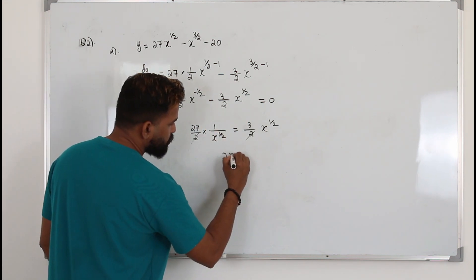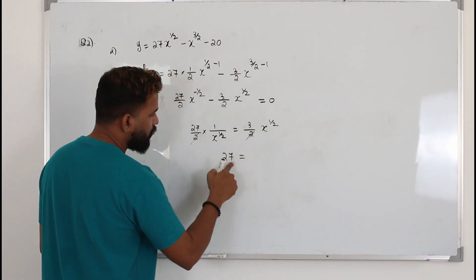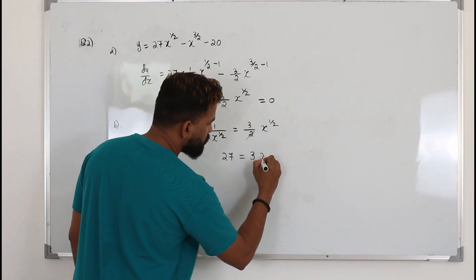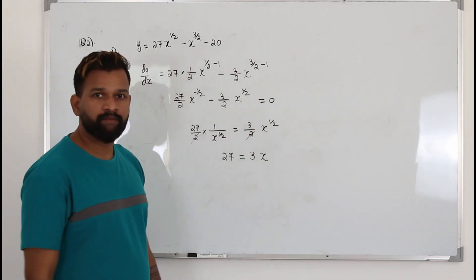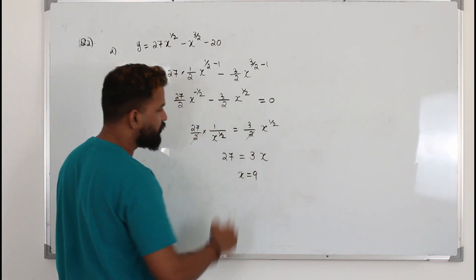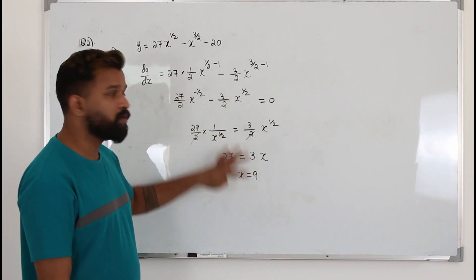So here the x power half will be gone. You will have only 27. Here 3. x power half times x power half is x power half plus half which is 1. So x is 27 over 3. That's how you solve this.